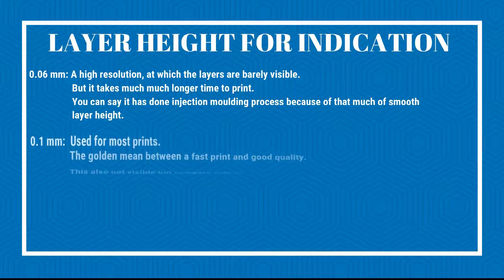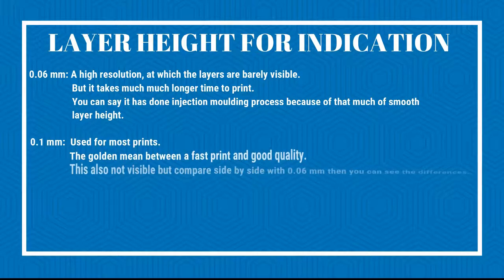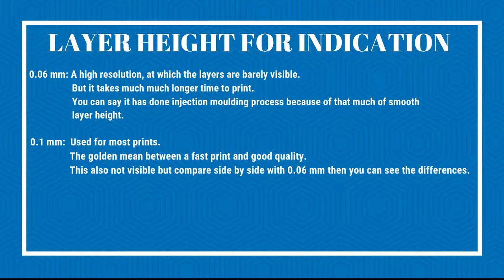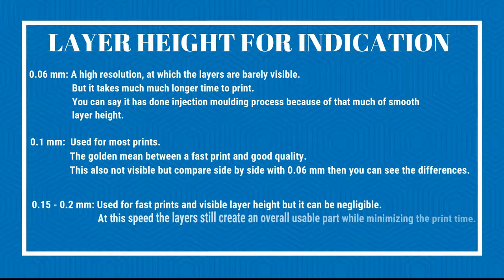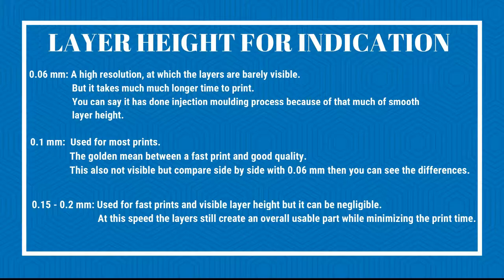The second setting is 0.1 mm, used for most prints — the golden mean between fast printing and good quality. Layers are not visible at this setting, but compared side by side with 0.06 mm, you can see basic differences. The third setting is 0.15 to 0.2 mm, used for fast prints where layer lines are visible but can be negligible. At this setting, the part is still overall usable while minimizing print time.